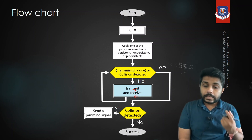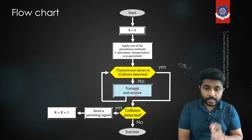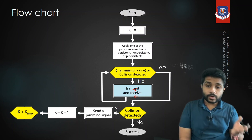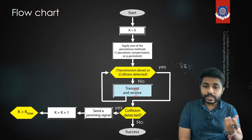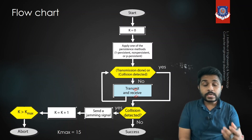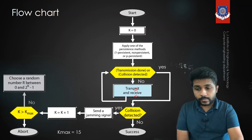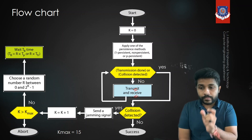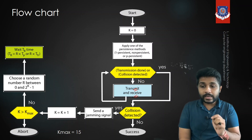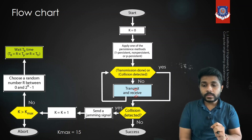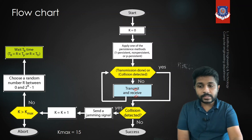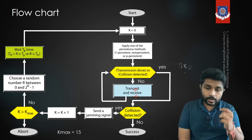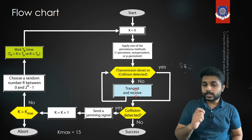After sending the jamming signal, the sender increments K by one. It then checks whether K is greater than K_max, which is 15. If K does not exceed 15, the sender chooses a random number r in the range 0 to 2^K − 1, waits for a time equal to r multiplied by the propagation delay or transmission time of the frame, and then attempts to send the frame again. This flowchart continues until transmission is successful.